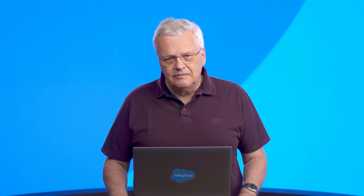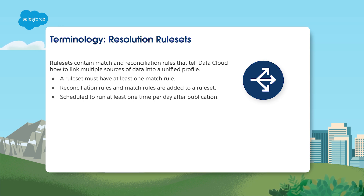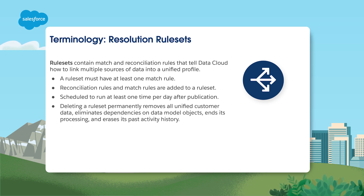Resolution rule sets are pivotal to identity resolution. A rule set contains match and reconciliation rules. Such a rule set can be scheduled to run daily after being published, or it can be run manually on an ad hoc basis. Deleting a rule set removes all the underlying unified customer data.